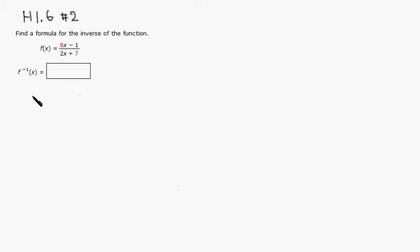So just go through four steps. Remember first step. First step is replace f of x by y. So y is equal to 8x minus 1 all over 2x plus 7.